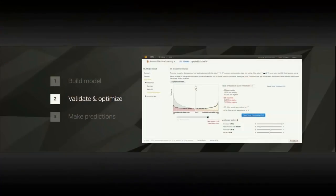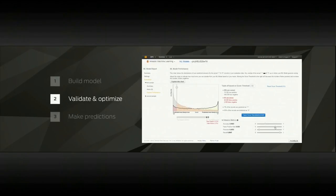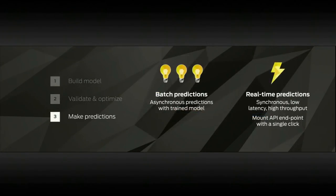Second, validate and optimize your model. We have interactive tools built directly into the console that let you play with and interact with the model you've created. You can adjust predictive accuracy, test for false negatives and false positives, and tune your model — literally a drag-and-drop operation. Third, once you have a model you like, you can make batch predictions asynchronously, or mount a synchronous, low-latency, high-throughput API for your application with a single click.